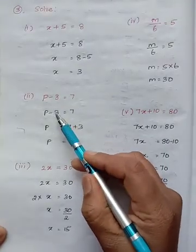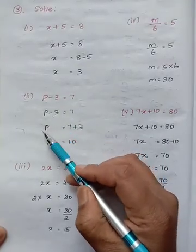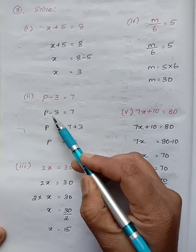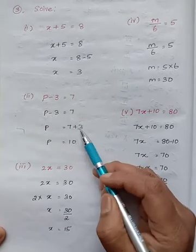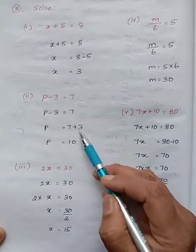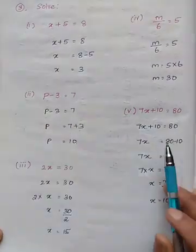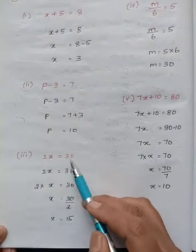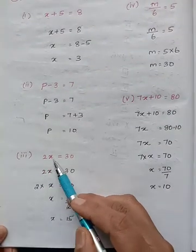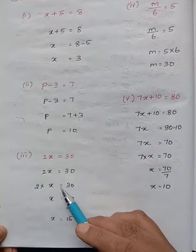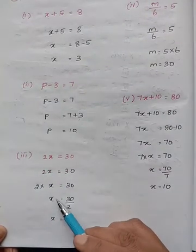p minus 3 equals 7. Our aim is to find the value of p. Minus 3, when taken to the other side, becomes plus 3. So 7 plus 3 equals 10. Therefore p equals 10.